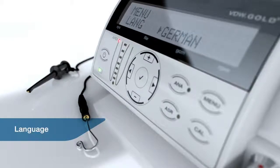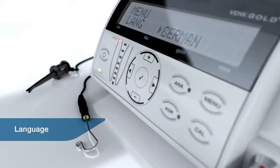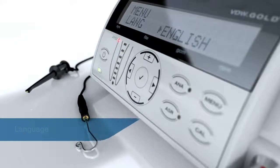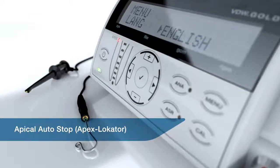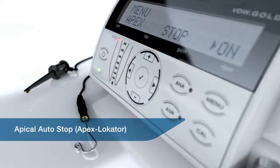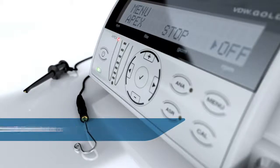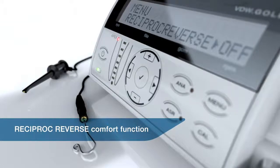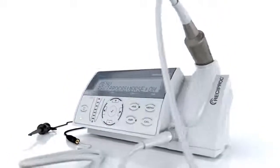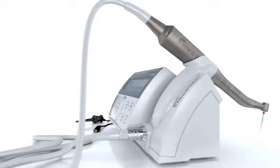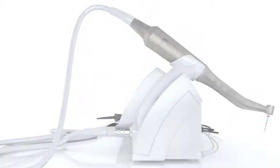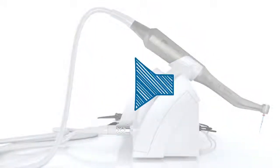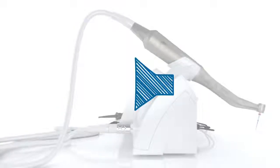You can select either German or English as display languages. The apical auto stop for the apex locator can be activated or deactivated. An additional function is the reciproc reverse comfort function. This two-step indicator gives early feedback in the case of increased friction of the Reciproc Blue instrument. It's especially helpful for new Reciproc users.